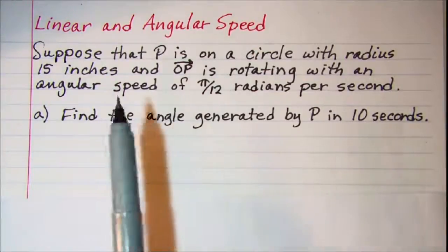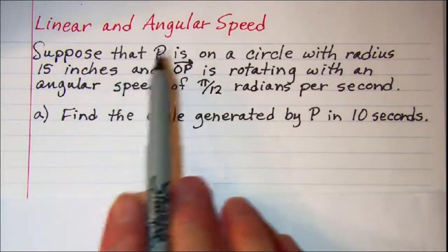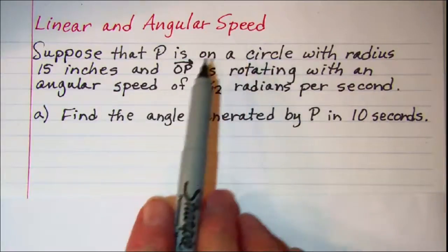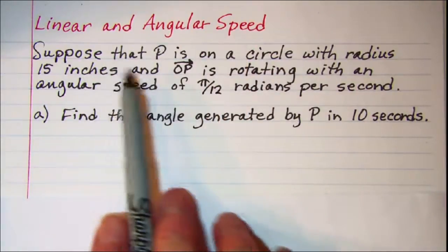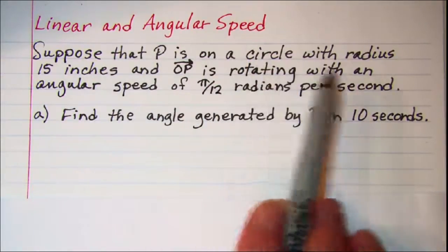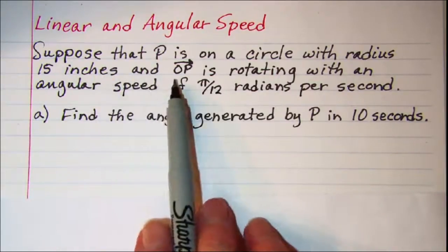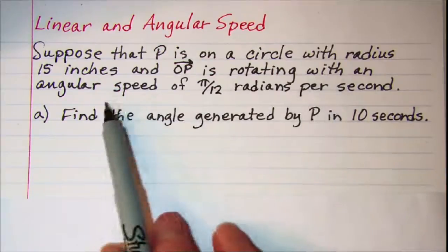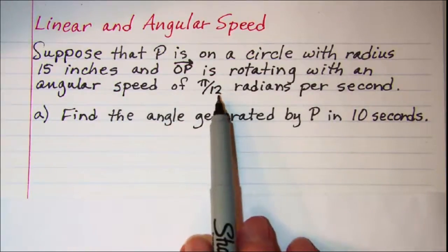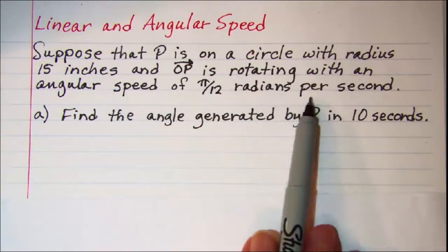In this video we'll be doing a problem involving linear and angular speed. Our problem is suppose that P is on a circle with a radius of 15 inches and ray OP is rotating with an angular speed of π/12 radians per second.